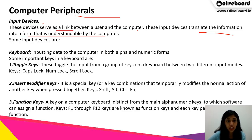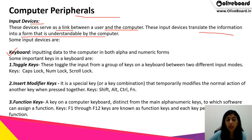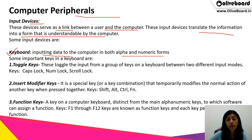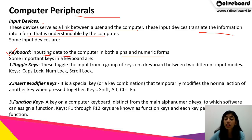Some input devices are: first is the keyboard. The keyboard helps us in inputting data to the computer in both alpha and numeric forms. All the alphabets are present on the keyboard and also the numbers from 0 to 9 are available.